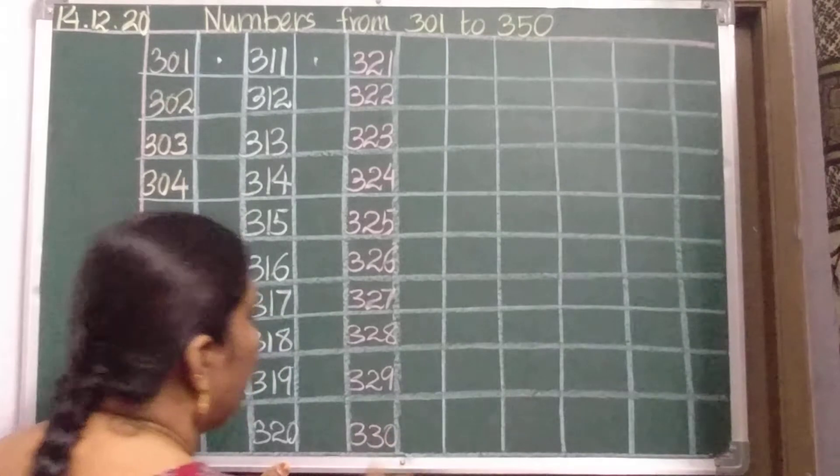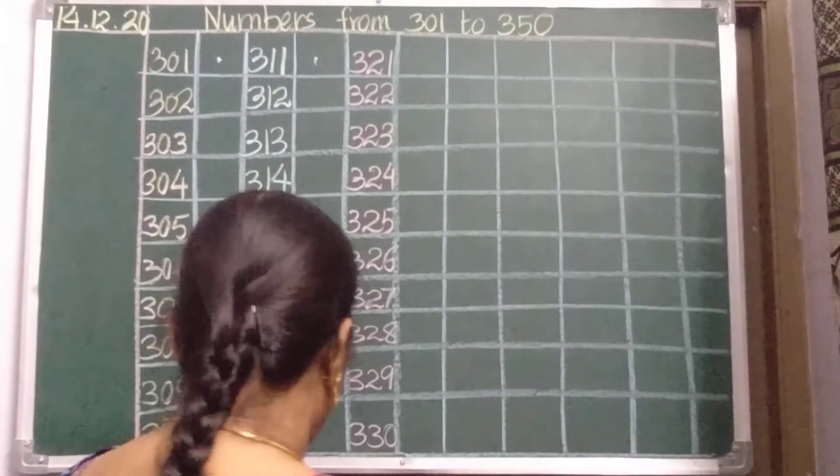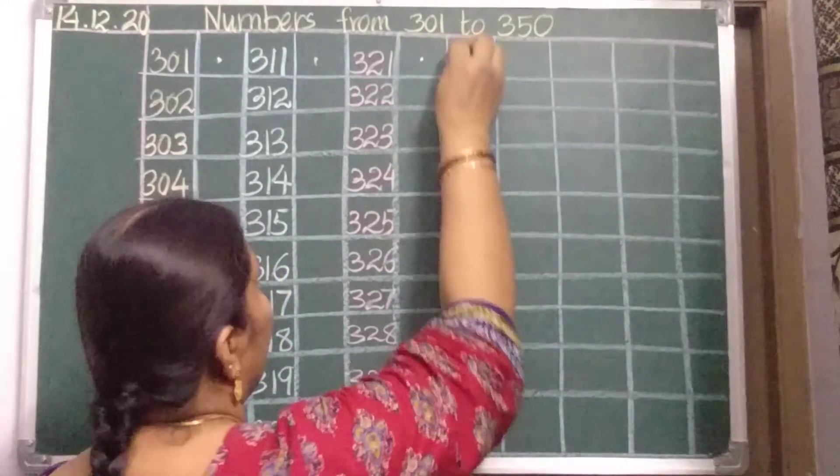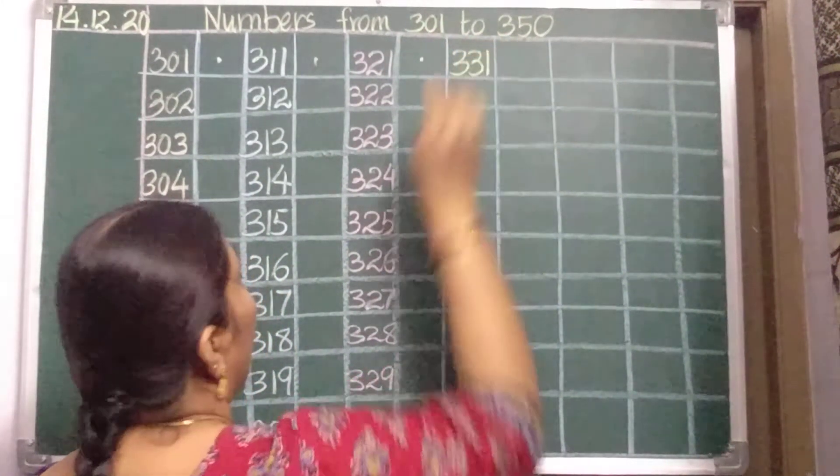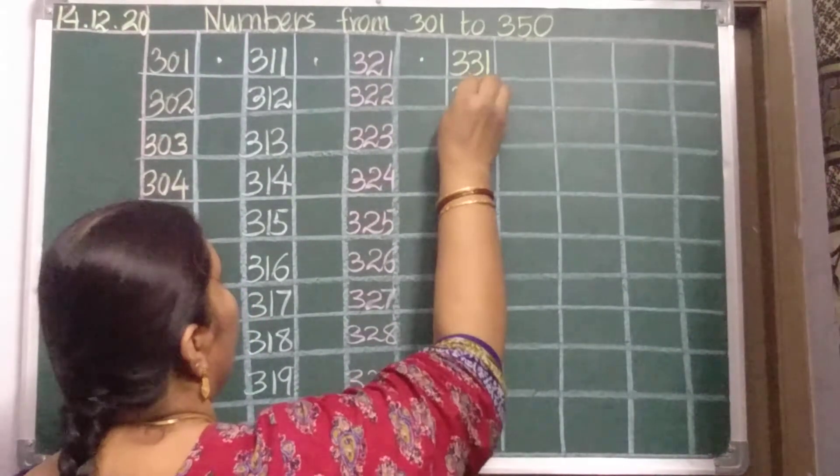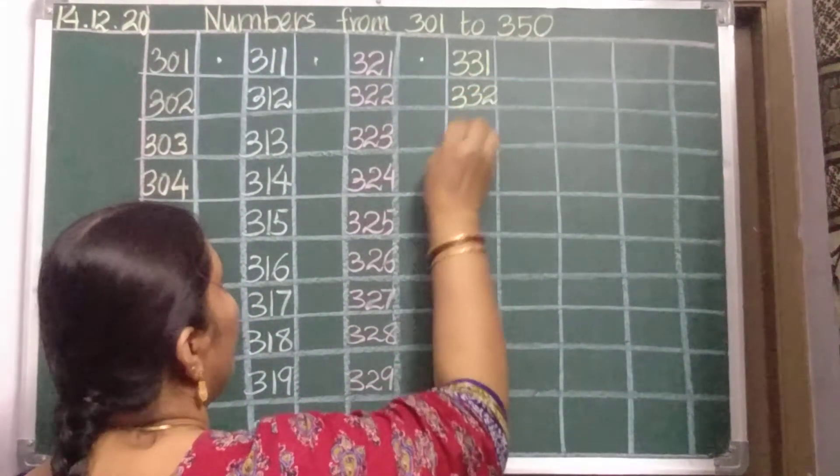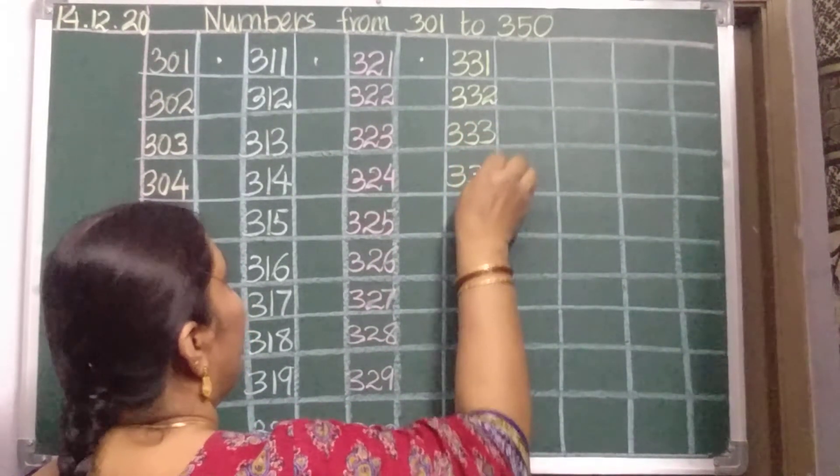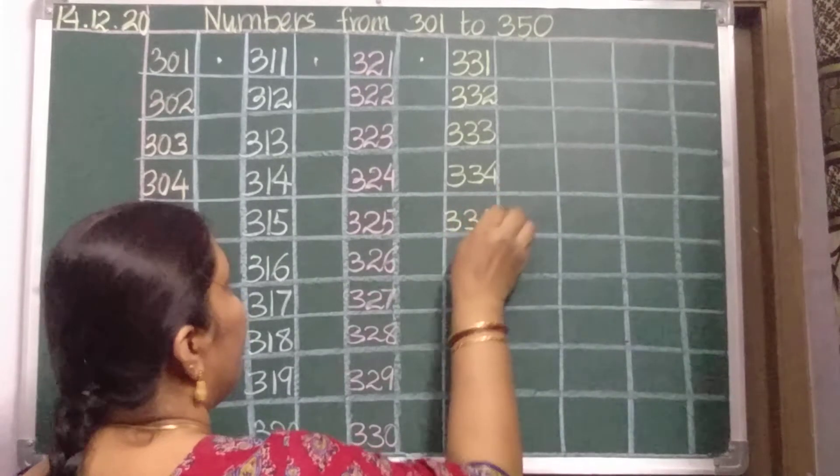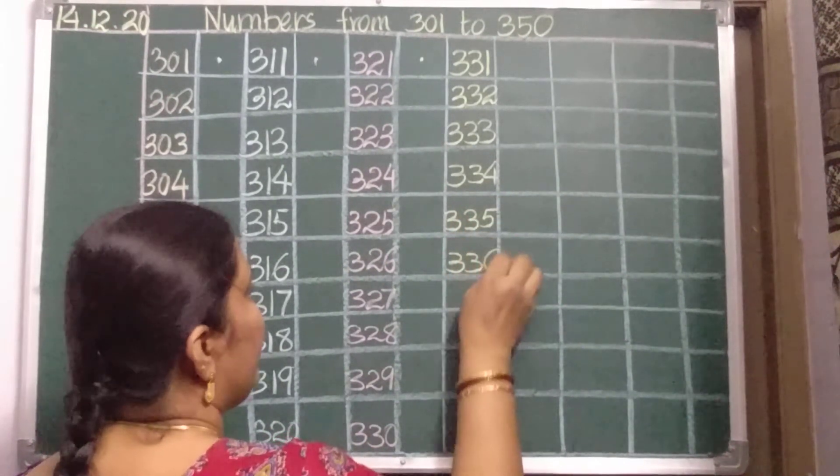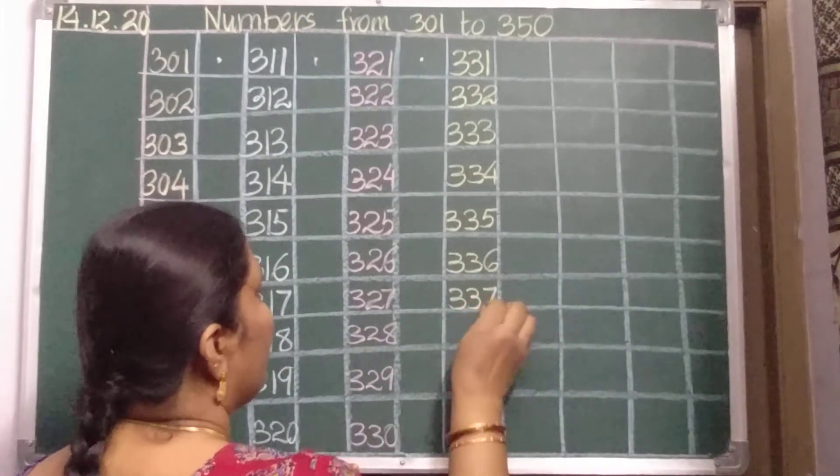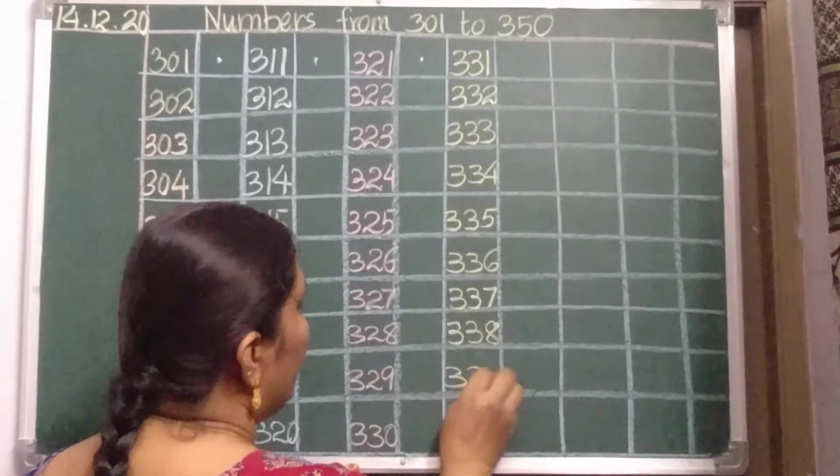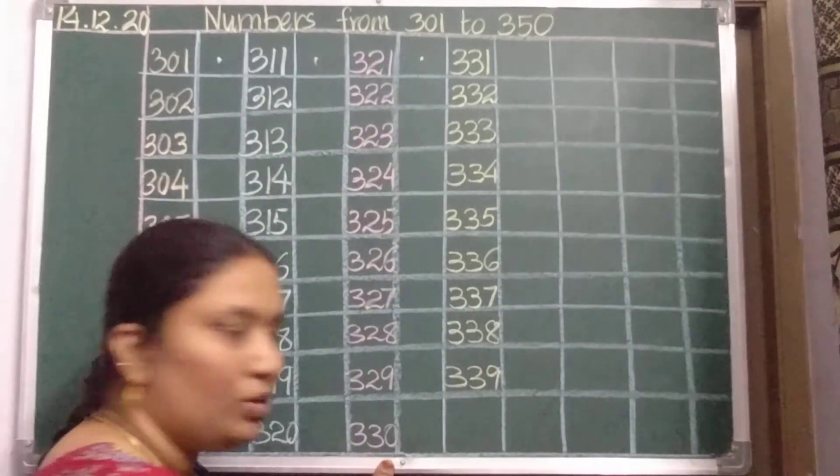So, 330, 30 after 31. Put a dot, leave a line. 331, 332, 333, 334, 335, 336, 337, 338, 339, 39 after 40.